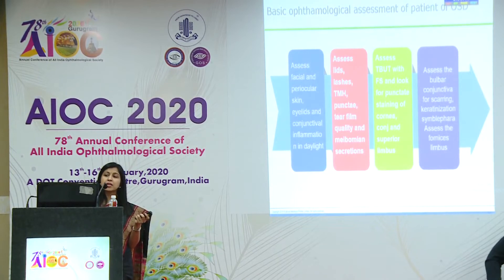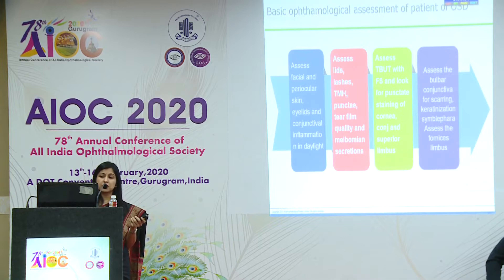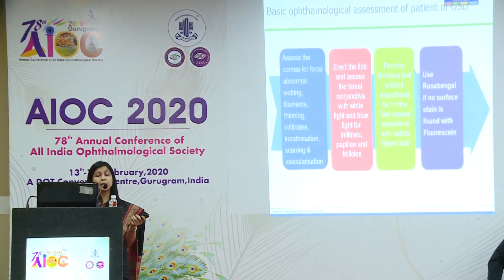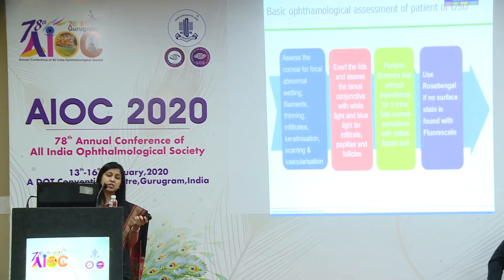Look at punctate staining of the cornea, the bulbar conjunctiva, check for any shortening of fornices as earlier signs, look for keratinization, presence of symblepharon, any focal wetting abnormalities of the cornea. Evert the lid to look at the tarsal conjunctiva, do a Schirmer's test with and without anesthesia, test the sensations, and do a rose bengal stain if no surface staining is found with fluorescein.